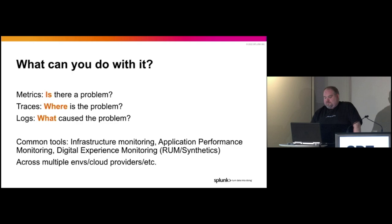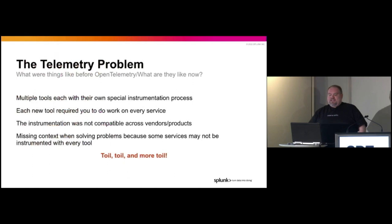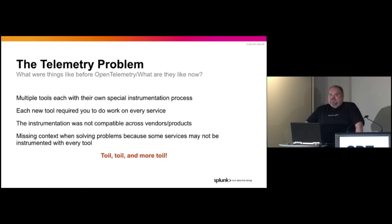Before you get observability, you need to get data. To get data into the system, you use something called telemetry. This has a negative connotation among the privacy-conscious, but in this context we're not talking about user data — we're talking about data about their transactions. Back in the old days, the first approach people took was that every observability, monitoring, or incident response platform had their own special snowflake instrumentation process. You had to install an agent and get every single one of your applications set up to emit data for that platform. Each new tool required you to do work on every single service, which sucks, obviously.